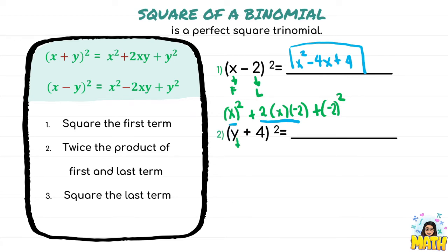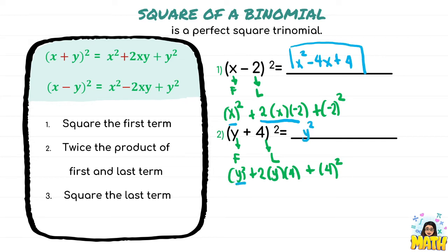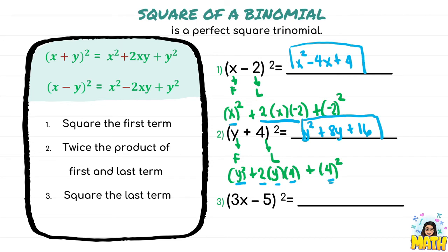Another example: we square the binomial where the first term is y and the last term is 4. We square the first term, add twice the product of the first and last terms, and add the square of the last term. So we get y squared, plus 2 times 4 times y giving 8y, plus 4 squared giving 16. Therefore the answer is y squared plus 8y plus 16.